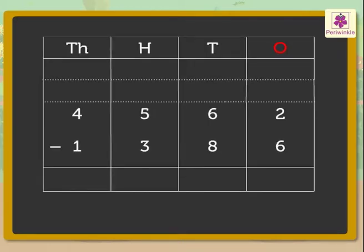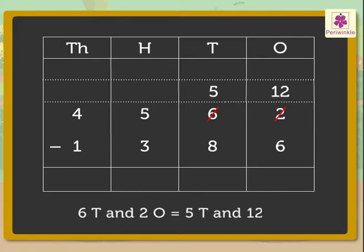Subtract the ones. That is, 2 minus 6. As the ones are not enough, we regroup the tens. That is, 6 tens and 2 ones is equal to 5 tens and 12 ones. Therefore, 12 minus 6 is equal to 6.